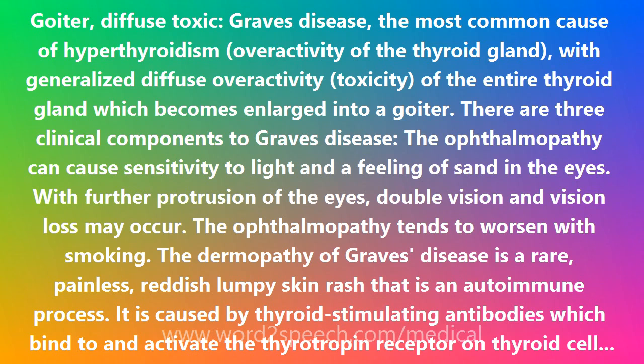Graves' disease can run in families. The rate of concordance for Graves' disease is about 20% among monozygotic identical twins, and the rate is much lower among dizygotic non-identical twins, indicating that genes make only a modest contribution to the susceptibility to Graves' disease. No single gene is known to cause the disease or to be necessary for its development.